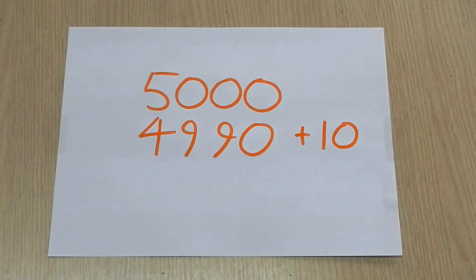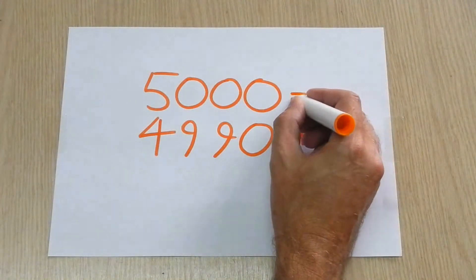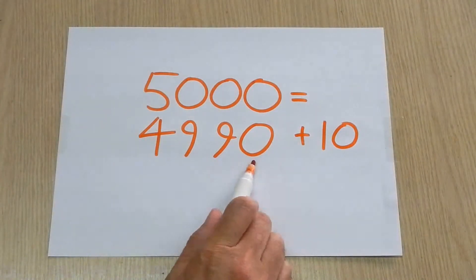That's all we're doing with this type of strategy. So we can say that 5,000 is the same as 4,990 plus 10. Why don't we try a slightly harder one? That sounds like a good idea.